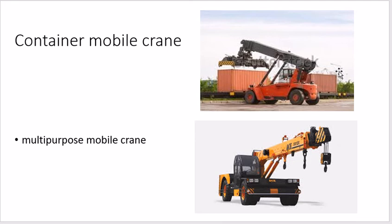Moving to industrial cranes, the container mobile crane is seen at seaports or dry ports — for example in Ludhiana — where it picks containers and places them onto trucks and vice versa. The multi-purpose mobile crane is used in cities for common purposes: towing cars, carrying loads, or recovering overturned trucks on highways. These cranes are lighter and cannot carry heavy loads, but their mobility and maneuverability are high.